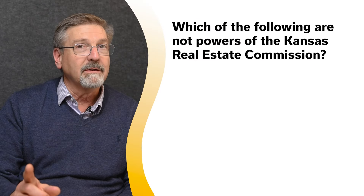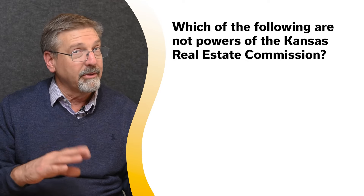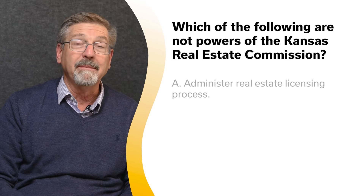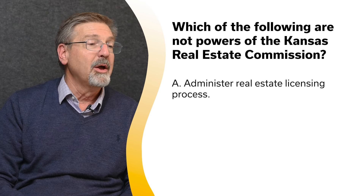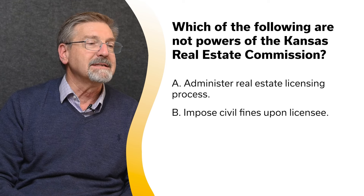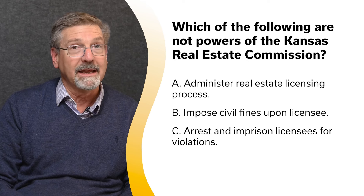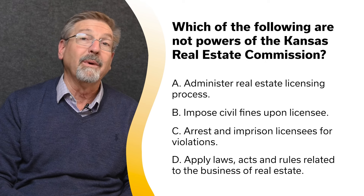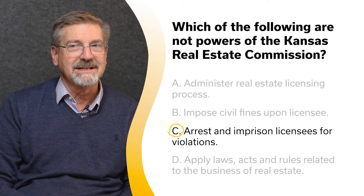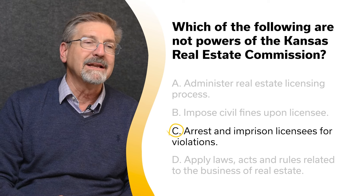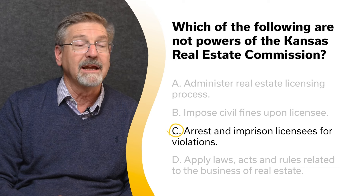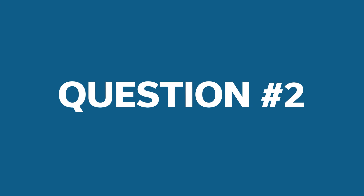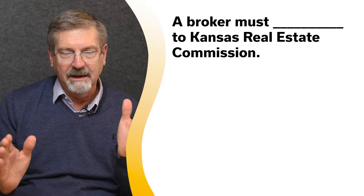Watch out for 'not' and 'except.' Which of the following are NOT powers of the Kansas Real Estate Commission? A. Administer real estate licensing process. B. Impose civil fines upon licensees. C. Arrest and imprison licensees for violations. Or D. Apply laws, acts, and rules related to the business of real estate. The correct answer is C. The Kansas Real Estate Commission may impose civil fines upon licensees, but they cannot arrest or imprison licensees for violations.